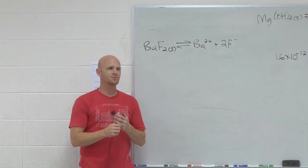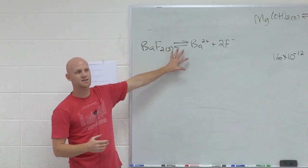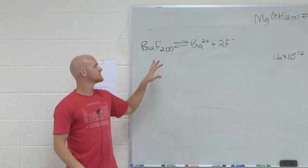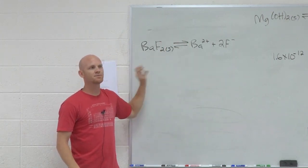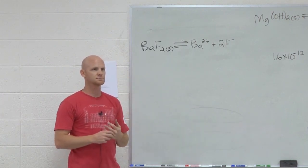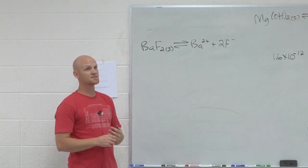Barium fluoride. There's the Ksp reaction for it. What could I do to the solution to make barium fluoride less soluble, to decrease the solubility? What could I add to this solution to make it less soluble?